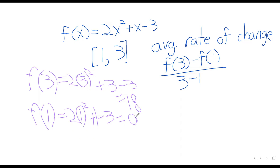And then once you have those numbers, we just plug and play: 18 minus 0 divided by 3 minus 1. This is 2, so 18 divided by 2 is 9. And there's our average rate of change.